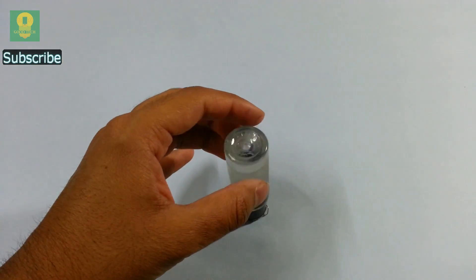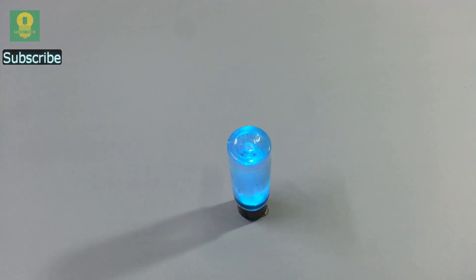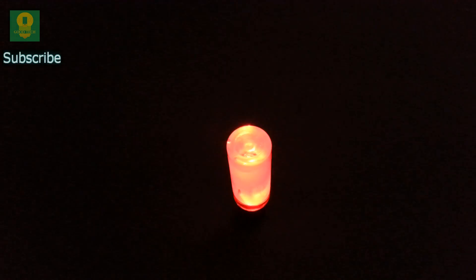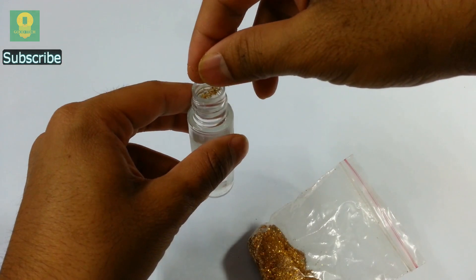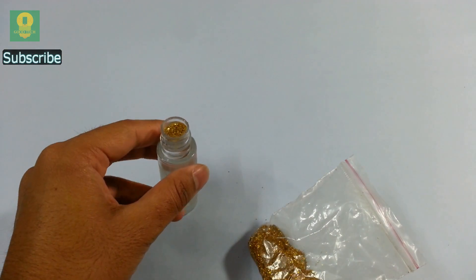When we now place the bottle inverted, the LED turns on and the water helps in scattering the light inside the bottle. You can also add some glitter to get a sparkling effect in water.